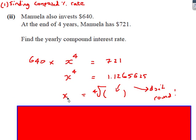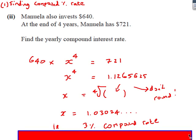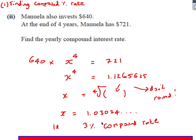And then I basically put that on my calculator there. You should have a button on your calculator, find the fourth root, and put the whole number in. So use your answer key from the calculator. And you should end up with X being 1.03024... Now remember, because it's compound, it was increasing. So that one is just telling us it's increasing. So therefore, the actual percentage rate is 3% compound.